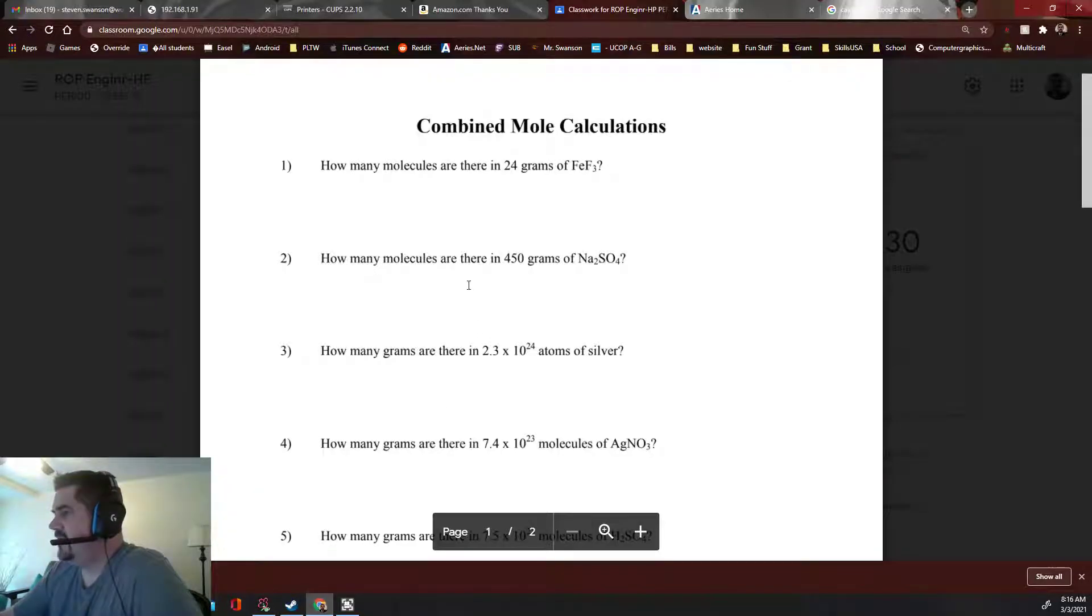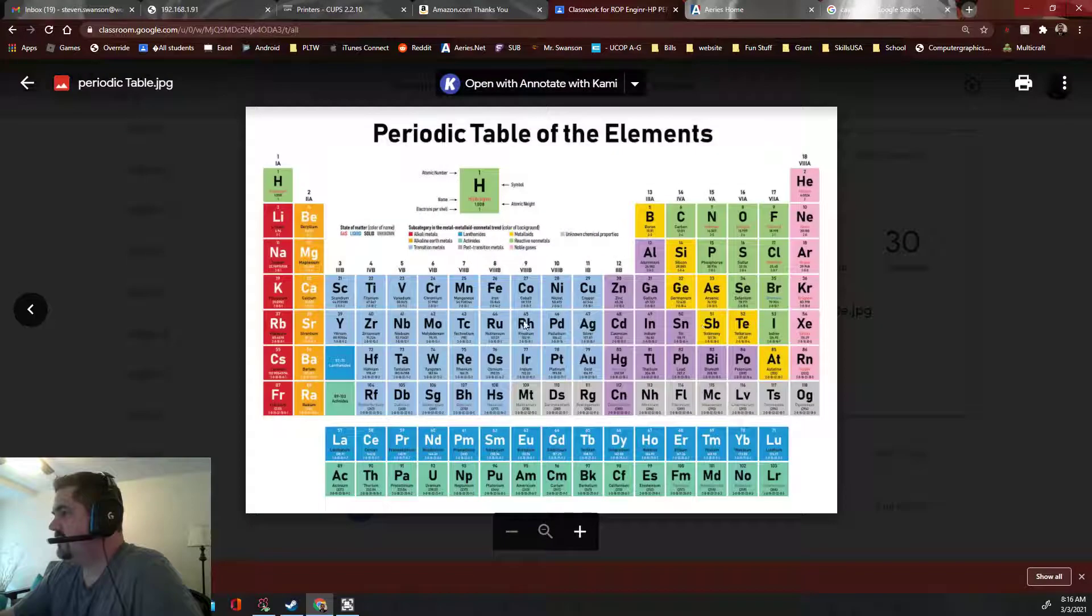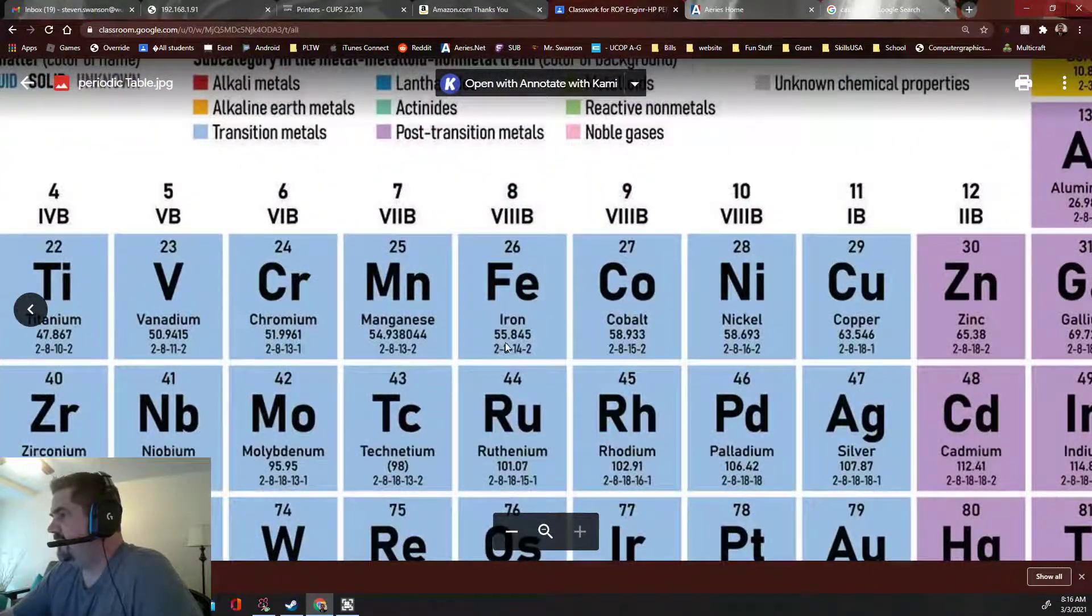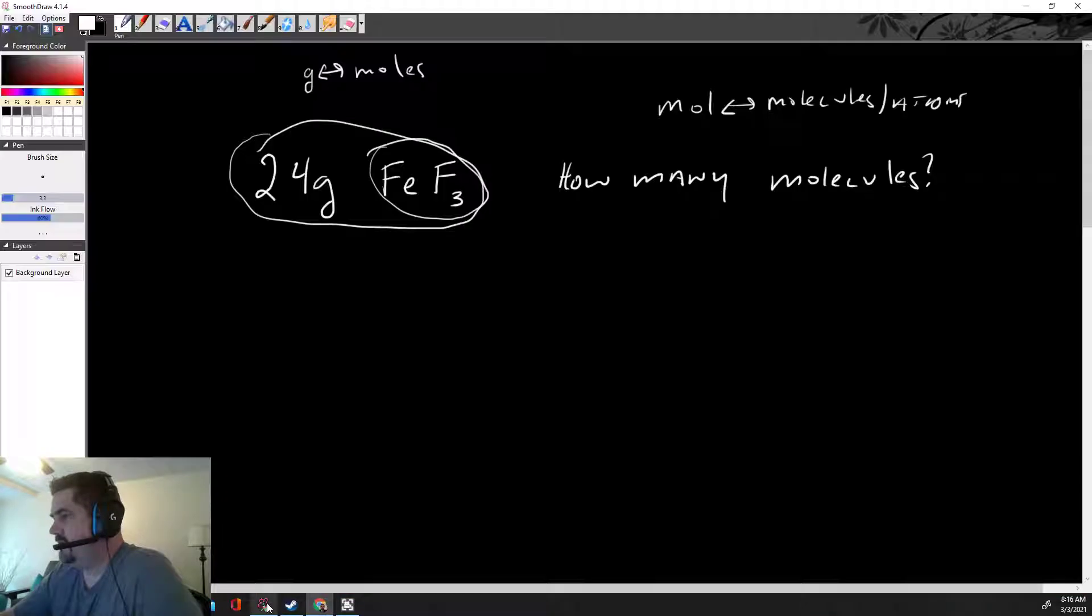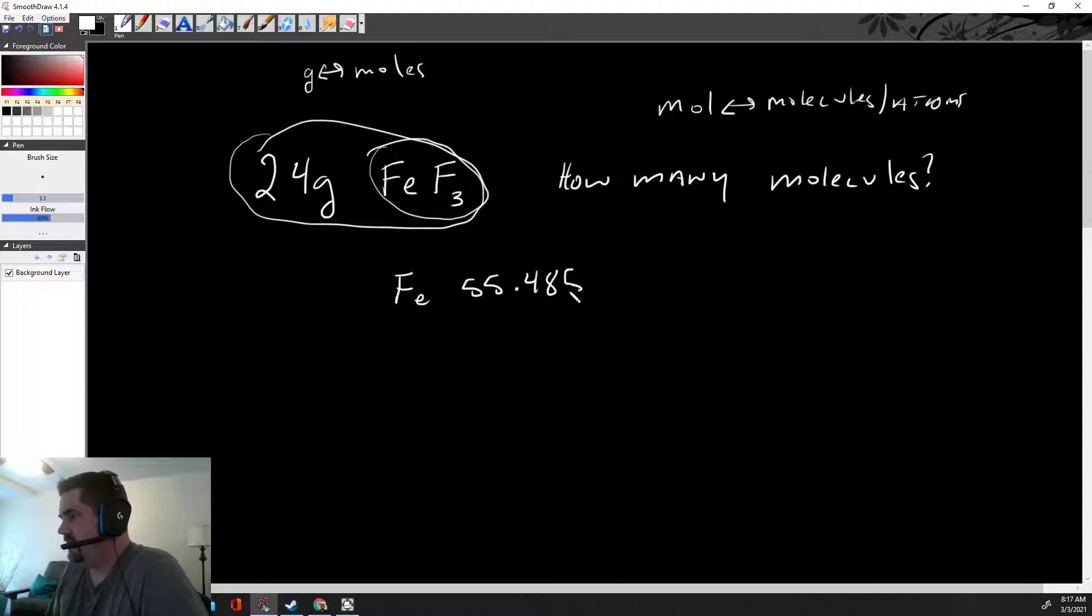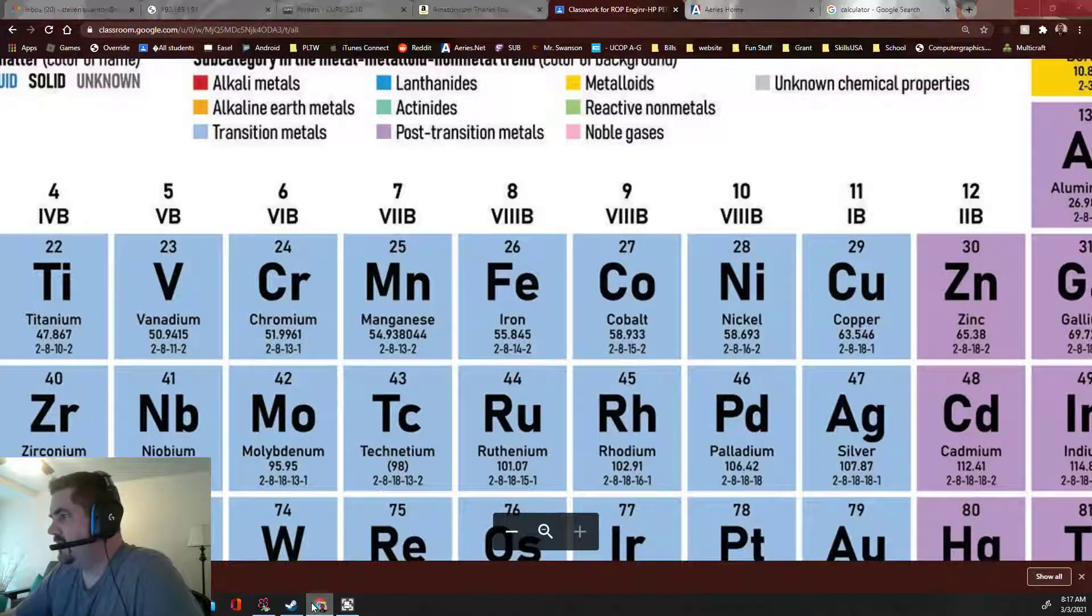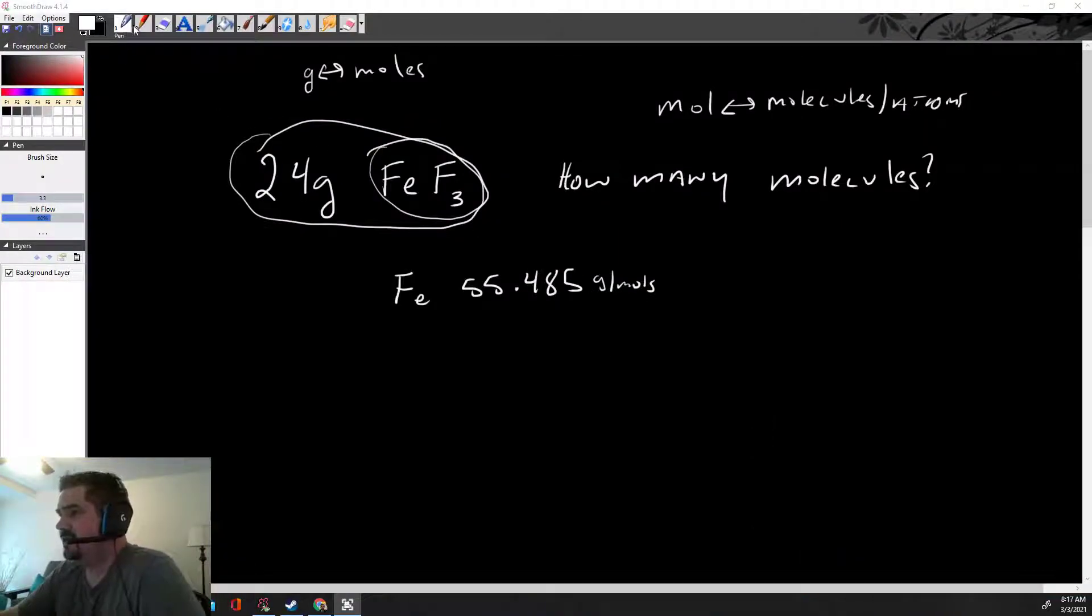Let's go ahead and jump into this, and let's go to the periodic table and see what iron is. Let's zoom in here. Iron is 55.845. So iron is 55.845, if I remember that right. And that's grams per mole. That's how many grams iron is per mole. I got it backwards, but you get the point.